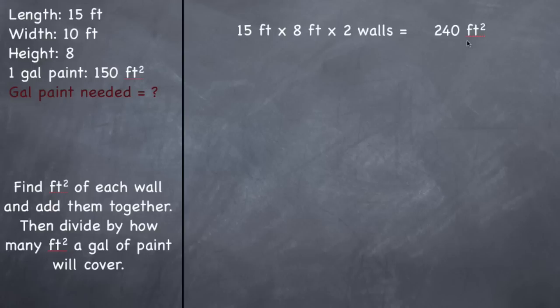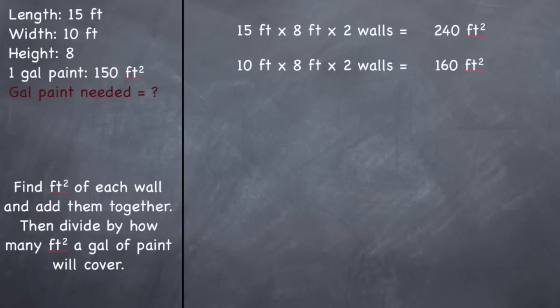When you do that you get 240 square feet, so those two walls total 240 square feet. Now for the other two walls: 10 feet times 8 feet times two walls, which gives you 160 square feet.